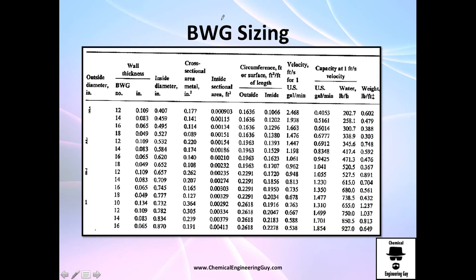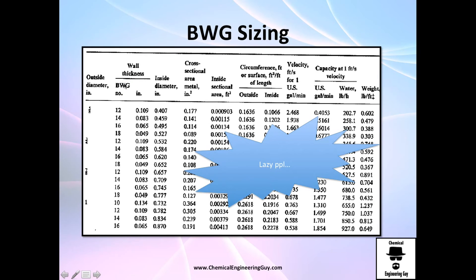Now, regarding BWG sizing — the Birmingham Wire Gauge values are different from ASME schedule numbers but work exactly the same way. If they give you a diameter and a BWG gauge number, you look up the internal diameter, wall thickness, and cross-sectional area from the BWG table. The only difference between ASME and BWG is that instead of schedule numbers, they use BWG numbers. The extra pre-calculated columns are the same — useful but not necessary since you can calculate them yourself.